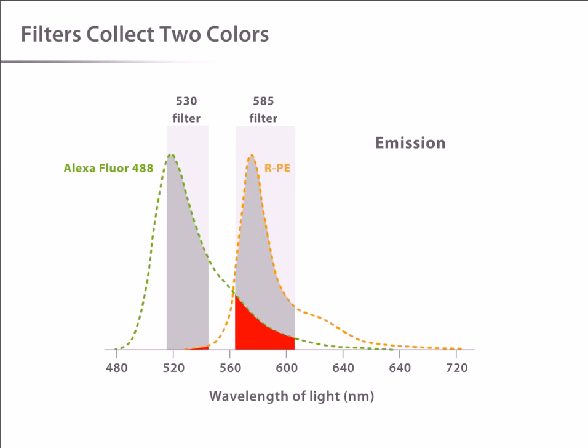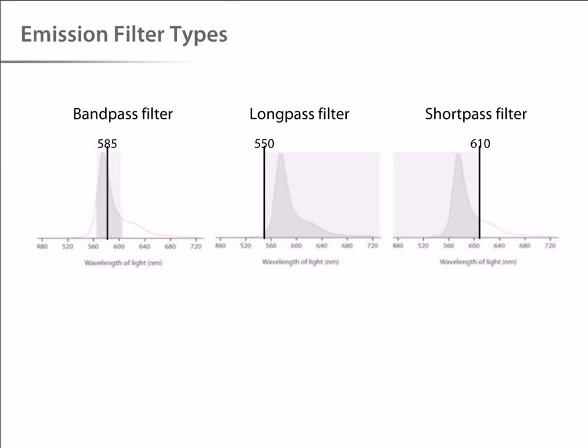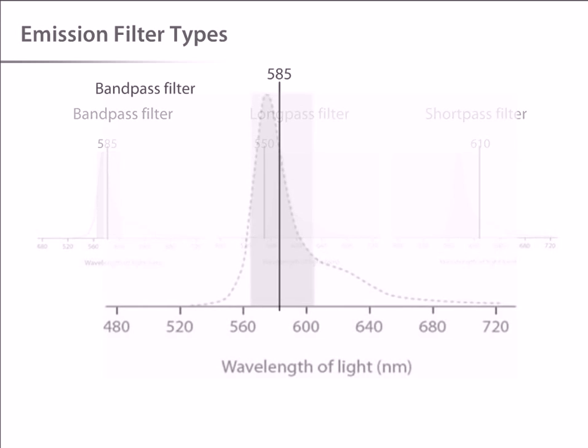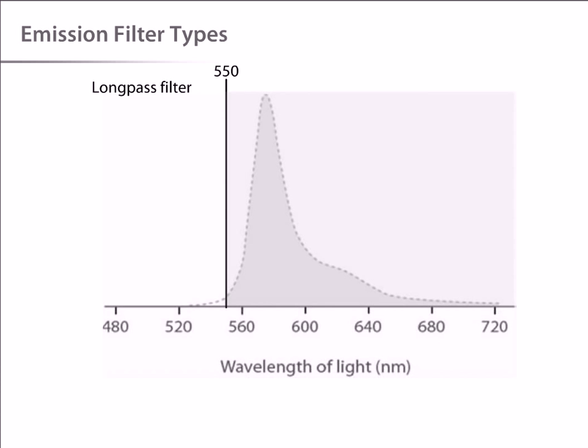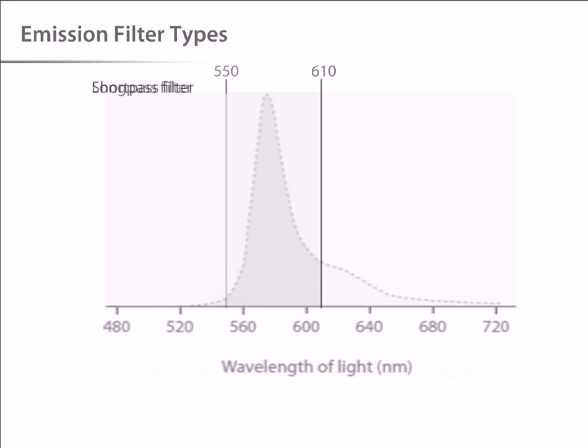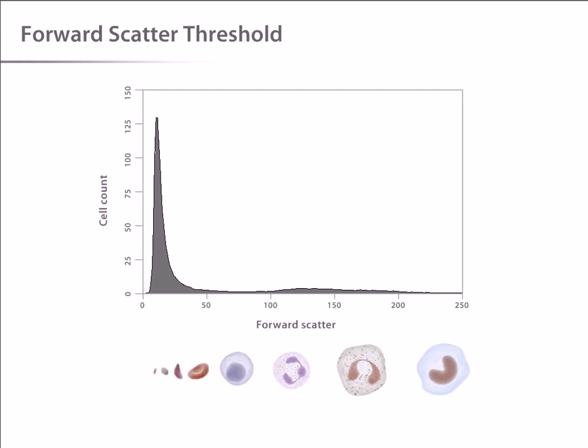Let's take a moment to talk about filter nomenclature. Filters are normally defined by one of two parameters, either the center point for a bandpass filter or the cutoff point for a long or short pass filter. This is a typical bandpass filter specific for R-PE. It has a center point of 585 nanometers and a width of 42 nanometers, so this filter optimally passes light in the wavelength range of 564 to 606 nanometers, which corresponds to the emission peak of R-PE. Other filters used to resolve this peak include a 550 nanometer long pass filter and a 610 nanometer short pass filter.